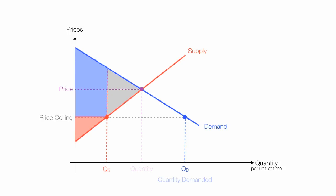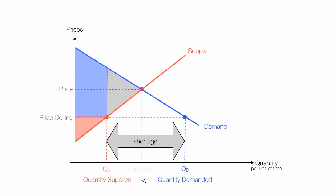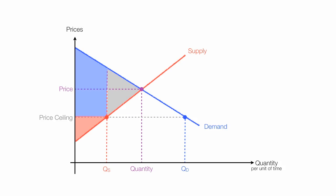Since quantity demanded is greater than quantity supplied, there's also going to be a shortage. You can calculate shortage by taking quantity demanded minus quantity supplied at the price ceiling levels. Since quantity supplied is now less than equilibrium quantity, producers have lost out — quantity supplied has reduced by the length of that red line. This red triangle is a loss to producers and becomes deadweight loss to society. Quantity supplied is what's actually produced and put into the marketplace. What consumers actually get has been reduced by the length of that blue line, and there's a deadweight loss to them — that's this gray triangle right here.